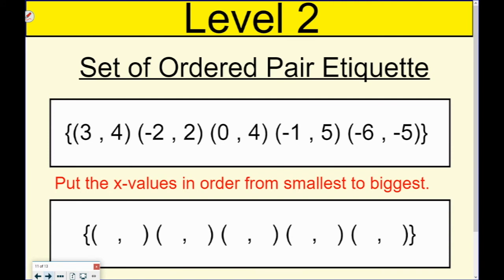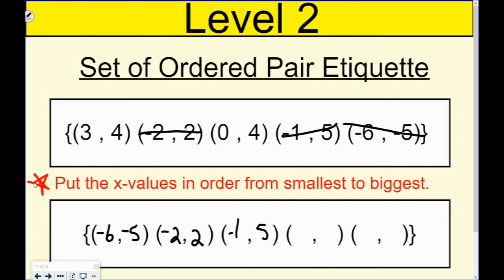So, with a set of ordered pairs, we're going to use the same etiquette — putting everything in order from least to greatest, but this one is only the x values; you match the y's with them. On a table and on ordered pairs, it's just the x values in order from least to greatest and the y's match up. It's the mapping where you put both of them in order from least to greatest.